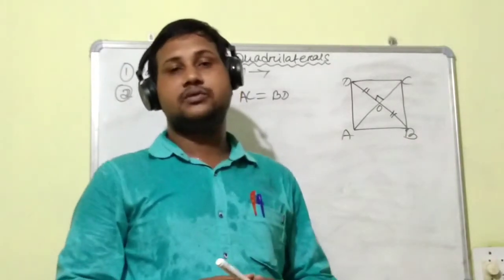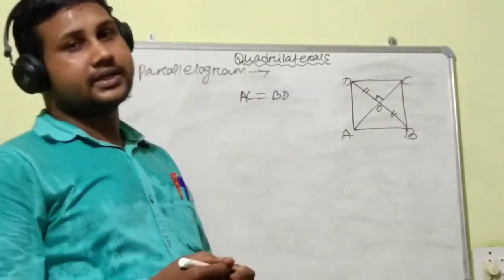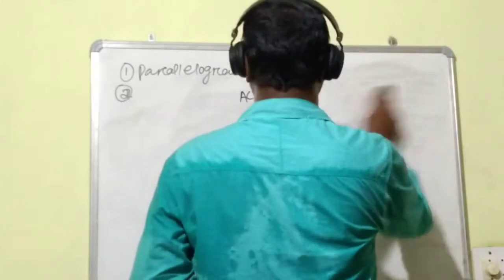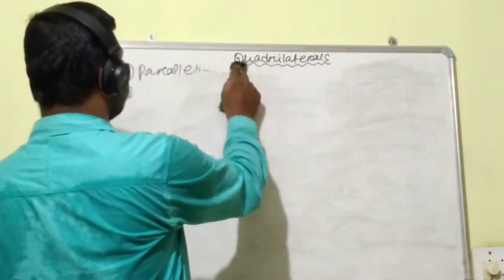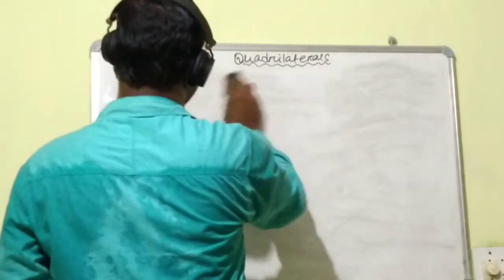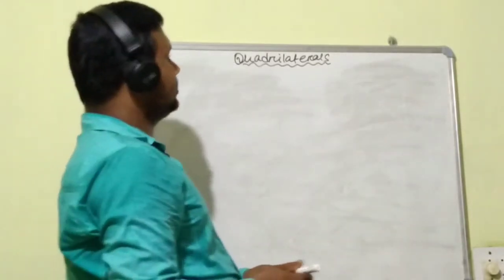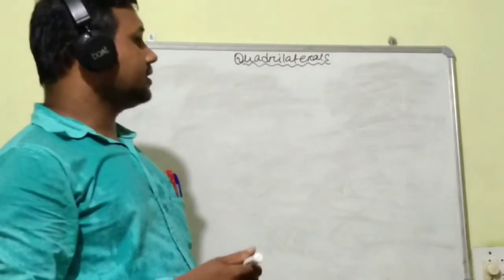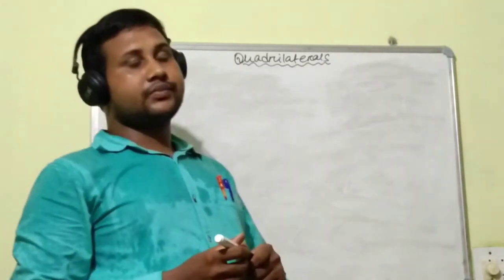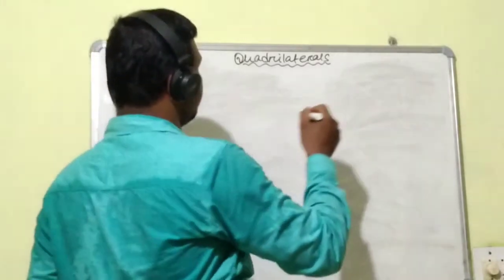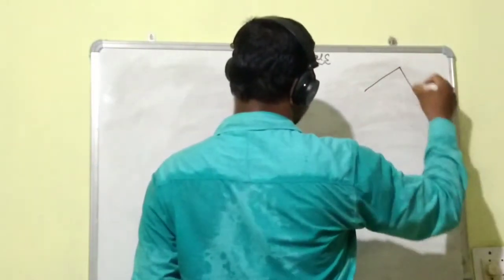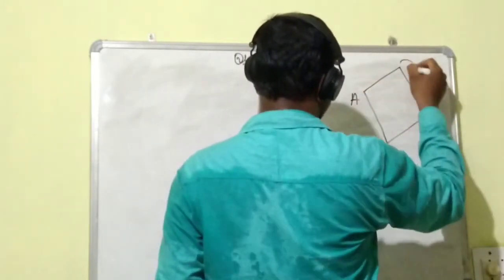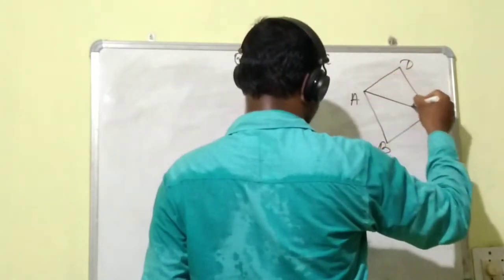We will discuss the angle sum property of a quadrilateral. You know, students, the angle sum property of a triangle — that is the sum of three angles of a triangle is 180 degrees. Now we will prove, using the angle sum property of a triangle, the angle sum property of a quadrilateral. This is the quadrilateral ABCD, and we join one diagonal AC.